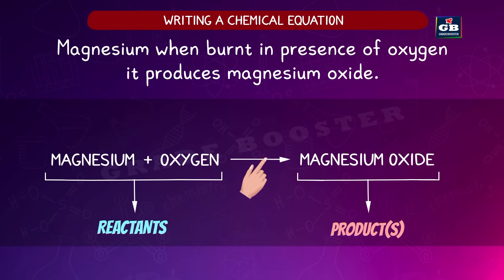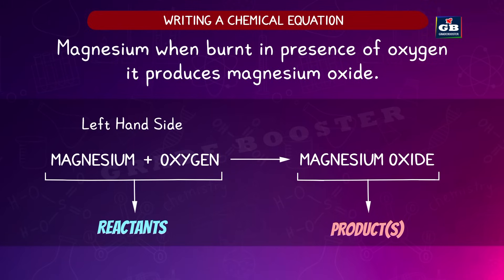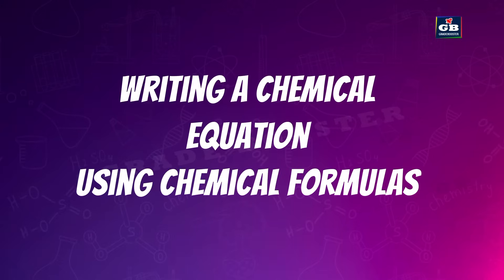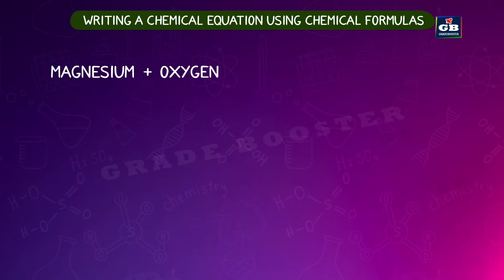The reactants and products are separated by an arrow that points towards the products and shows the direction of the reaction. Reactants are always written on the left-hand side and products on the right-hand side. There is a plus sign between two reactants and between products. We can also write this equation using chemical formulas: magnesium plus oxygen gives rise to magnesium oxide.